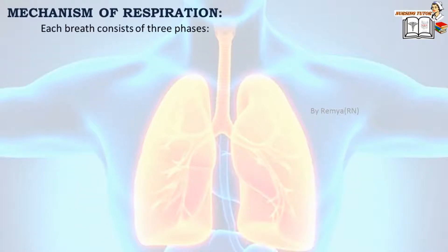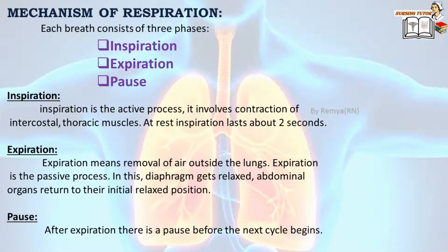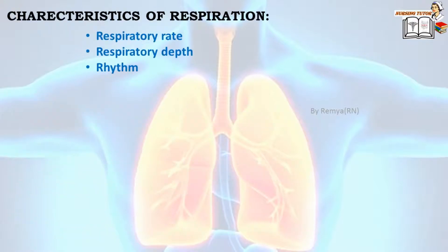Mechanism of respiration: Each breath consists of three phases — inspiration, expiration, and pause. Inspiration is an active process involving contraction of the intercostal thoracic muscles; at rest, inspiration lasts about two seconds. Expiration means removal of air outside the lungs; it is a passive process in which the diaphragm gets relaxed and abdominal organs return to their initial relaxed position. After expiration there is a pause before the next cycle begins.